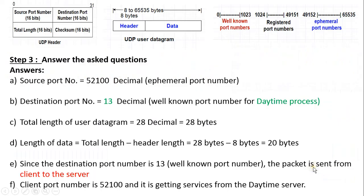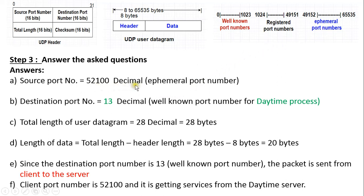The third step is to answer the asked questions. The source port number is 52100 in decimal. This port number lies in the range from 49152 to 65535, which are the ephemeral port numbers — also called private or temporary port numbers — which are temporarily allocated to client machines. So the source process is the client process, because its port number is an ephemeral port number.